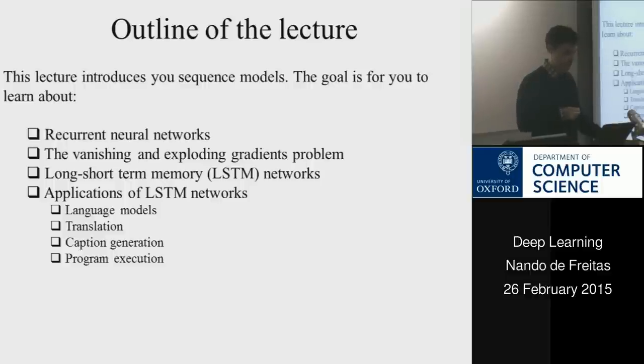I'll mention one trick by Hochreiter and Schmidhuber, two researchers in Switzerland, who actually made these networks work. And then we're going to go over a myriad of applications, things like language models, translation, how to generate captions automatically for images, how to take a piece of code and generate the answer just by looking at the code.